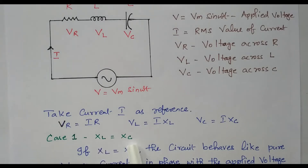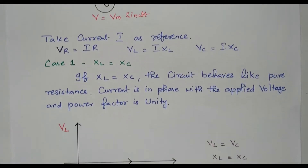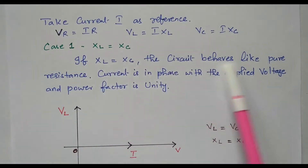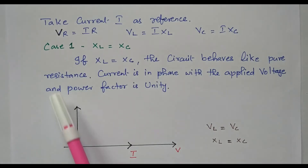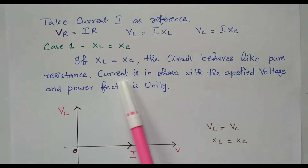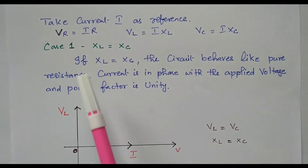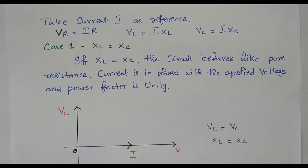Case 1 is Xl equal to Xc — capacitive reactance equals inductive reactance. If both are equal, the circuit acts as a pure resistance, because the capacitive reactance is cancelled by the inductive reactance — leading and lagging effects are cancelled. So it acts as only resistance, meaning current is in phase with the applied voltage and power factor is unity.